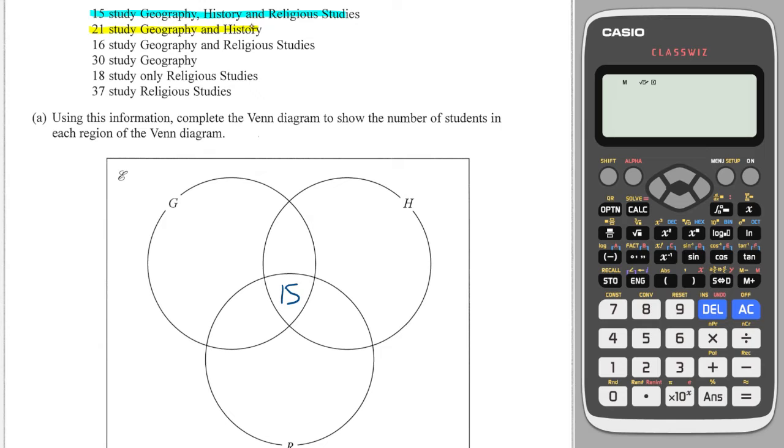You then work your way outside and the next bit of information you have is that 21 study geography and history. Tempting would be to put 21 in here, but that wouldn't be correct because you've already counted 15 of those people. They're in the center and they do study geography and history, so you're left only with 6. Same set of logic for this: 16 is geography religious, we've already got 15 people, so therefore 1 needs to go in here. The next bit of information which is useful is that 30 people study geography. We've already got 6, 15, and 1, so 6 plus 15 plus 1 is 22, which means we need 8 in here to make up the 30.